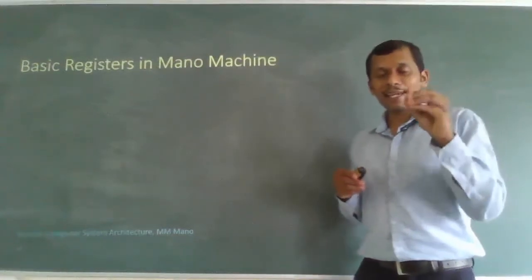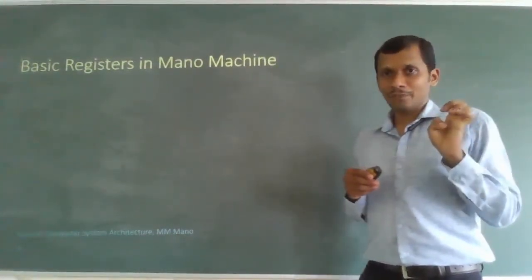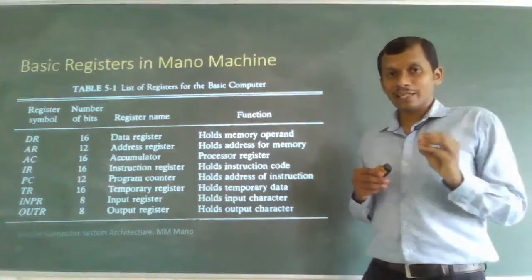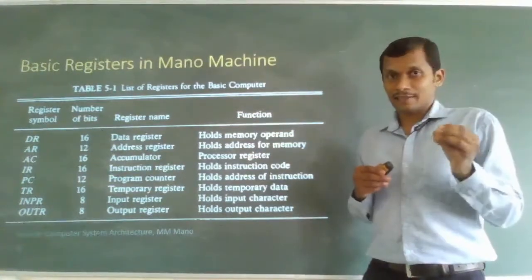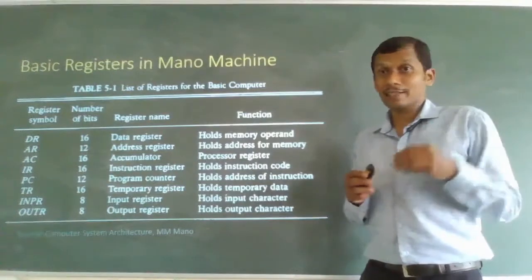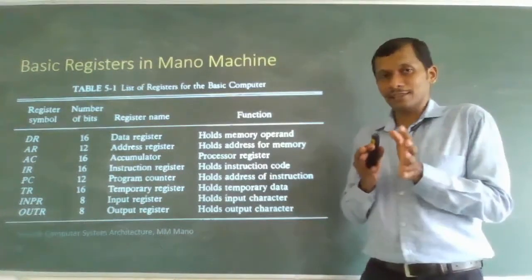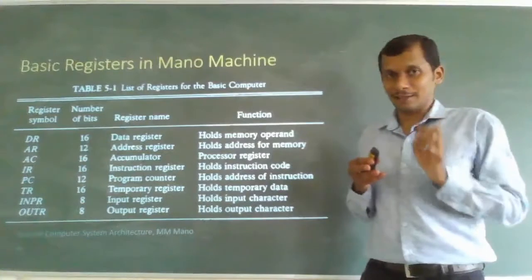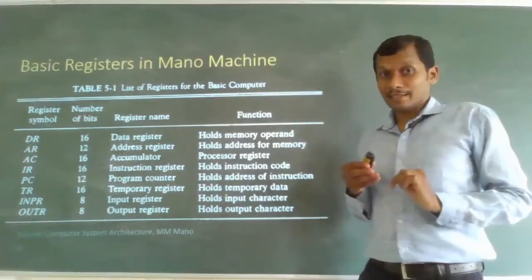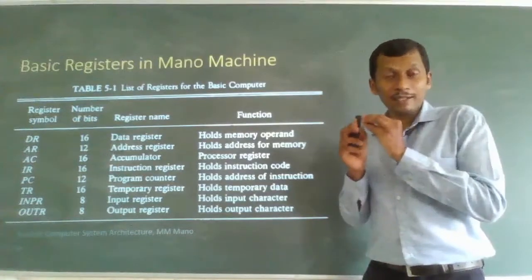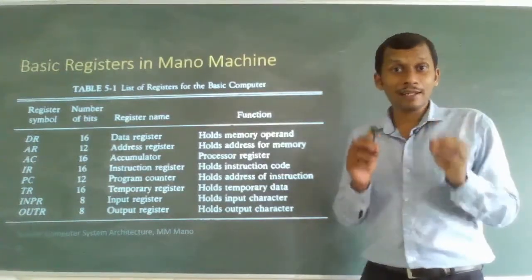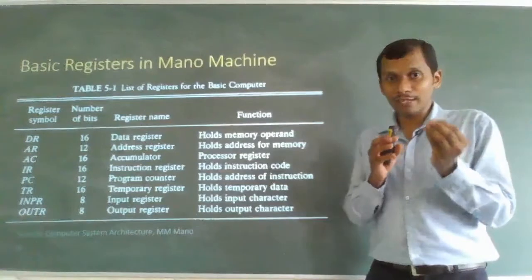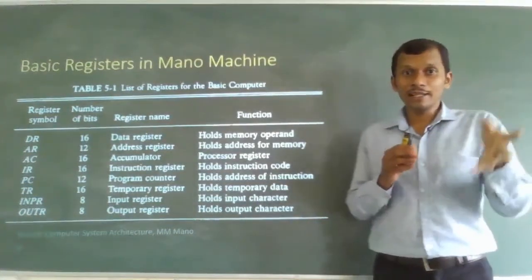What are the very essential registers for our basic machine? There are eight different registers. We will treat flags as flip-flops instead of registers. The first register, as seen in the table, is the data register, which holds a memory operand. Whatever operation you want to do — if you need some operand for that instruction — it can be stored in the data register.